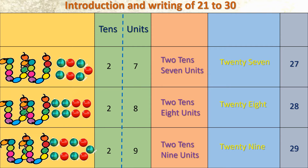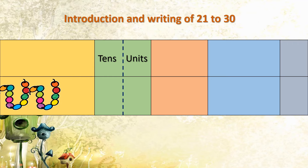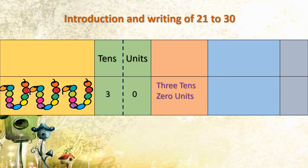Now, dear children, we are going to add one more bead to 29. Nine plus one is 10 — ten singles together make one 10. So we got here three tens and zero units; no singles are there, all 10 beads are tied together. The number formed is 30. T-H-I-R-T-Y. 30.